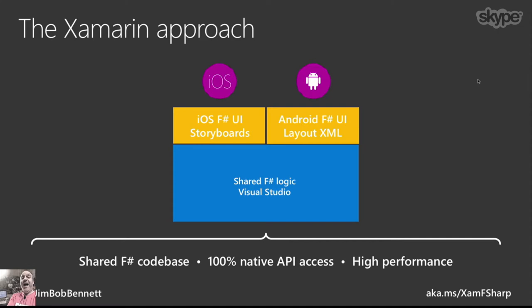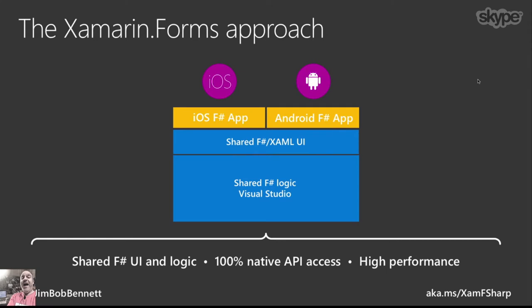As well as this version of Xamarin where you build UIs using native components, we also have Xamarin.Forms. Xamarin.Forms provides an abstraction on top of the native UIs to let you define your UIs in F#, C# code, or XAML. You define a UI using shared code — write your UI once, it runs on iOS and Android — and behind the scenes we map that to a native user interface. So a button in XAML becomes a UIButton on iOS and an Android widget button on Android.